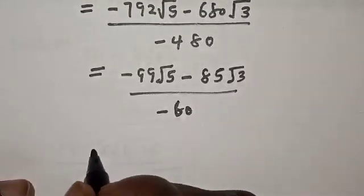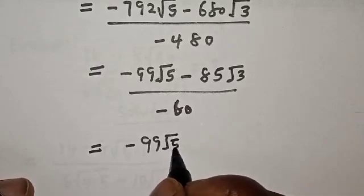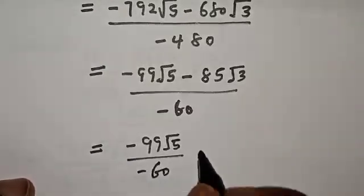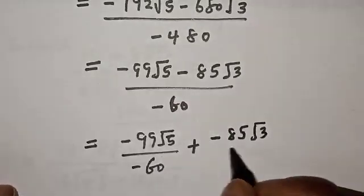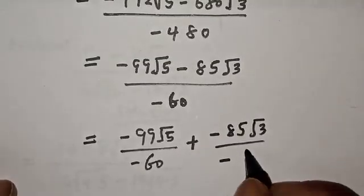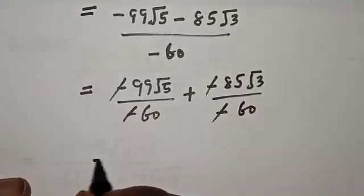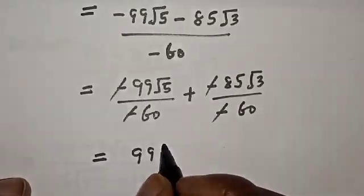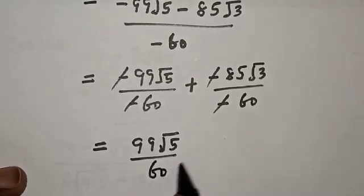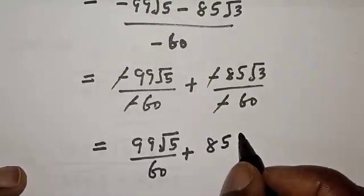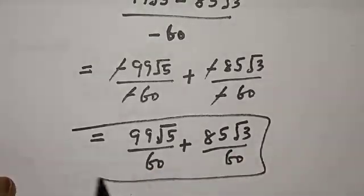We cancel the negative signs, so this equals 99 root 5 over 60 plus 85 root 3 over 60. And this is the final answer.